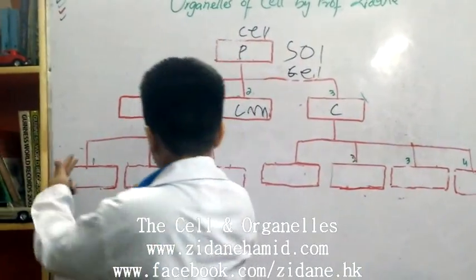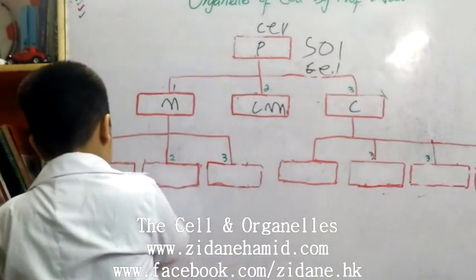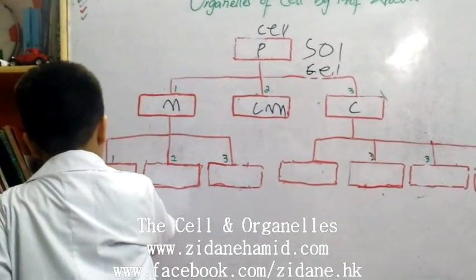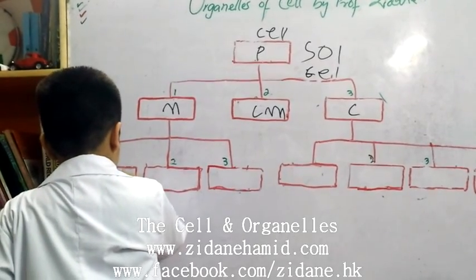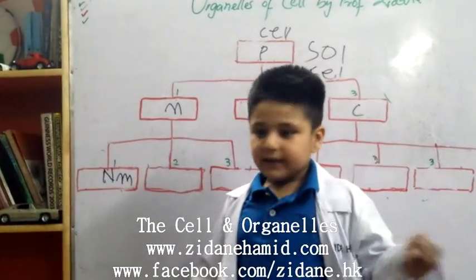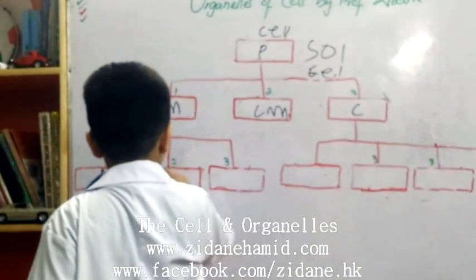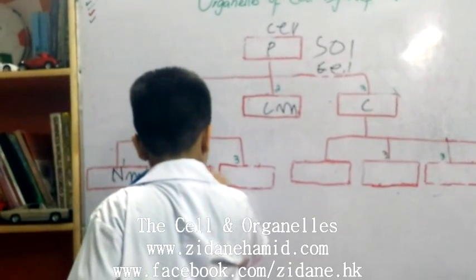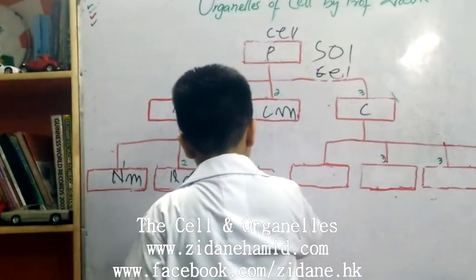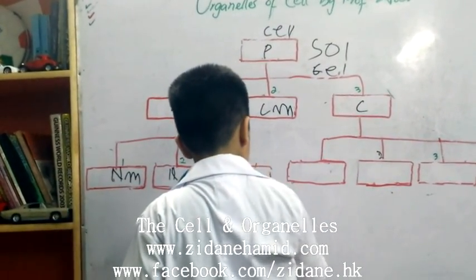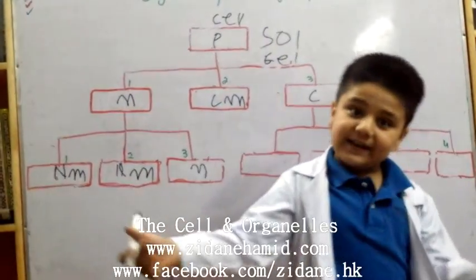We divide the nucleus into three parts: the nuclear membrane — the outer membrane — the nuclear material including the chromatin, and the nucleolus. The cytoplasmic organelles are the same: mitochondria, the centrioles which play an important role in mitosis, the lysosomes, and the ribosomes.